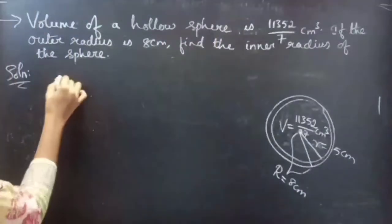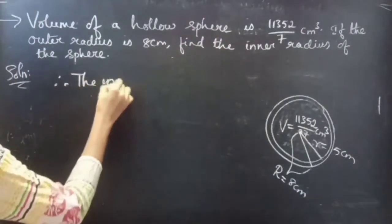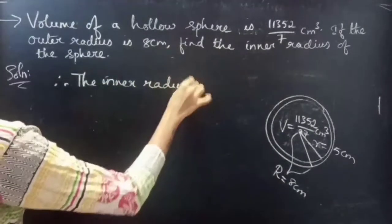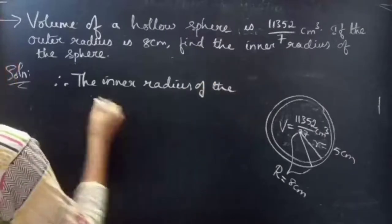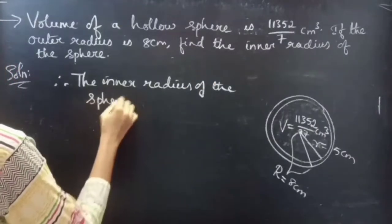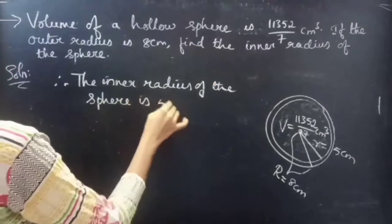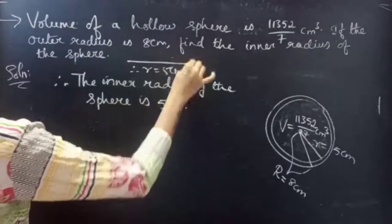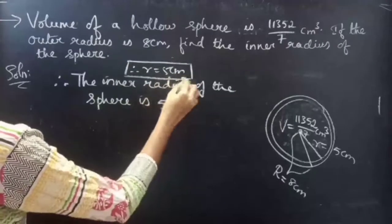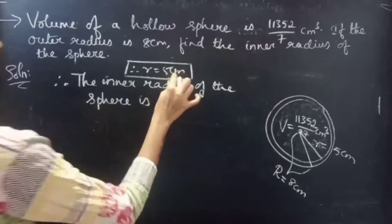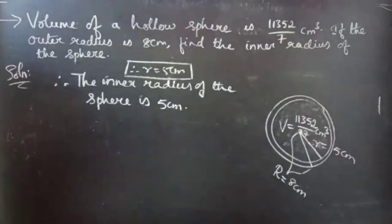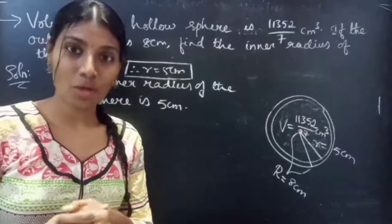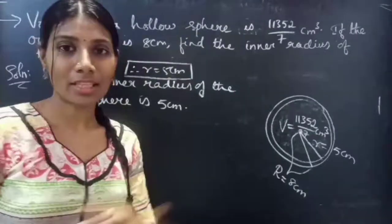Therefore the inner radius of the sphere is 5 centimeter. This completes the problem. We have seen a problem from mensuration in this video — hope you understand. See you in the next video, until then bye bye.